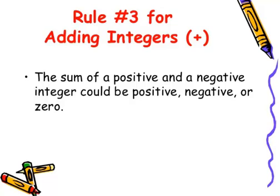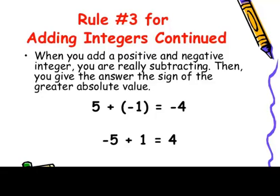Rule number three for adding integers: the sum of a positive and a negative integer could be positive, negative, or zero. When you add a positive and negative integer, you are really subtracting, then you give the answer the sign of the greater absolute value. For example, 5 plus minus 1 equals 4. When you understand the concept of plus and minus, you will work with integers very nicely.